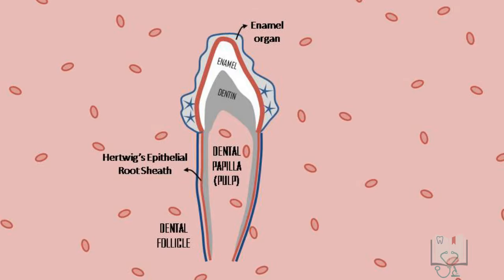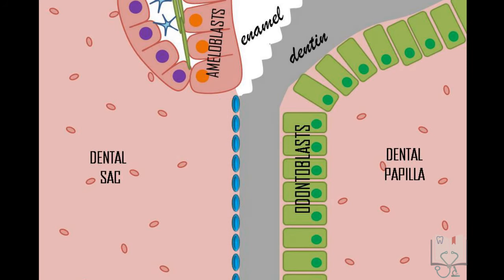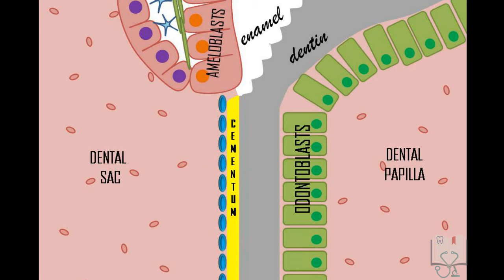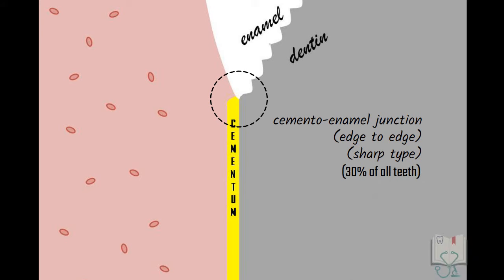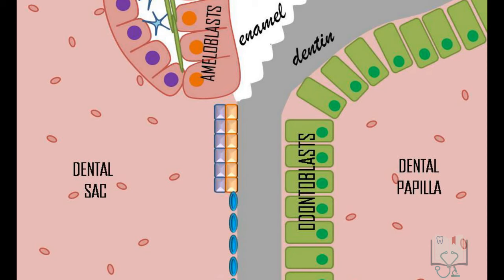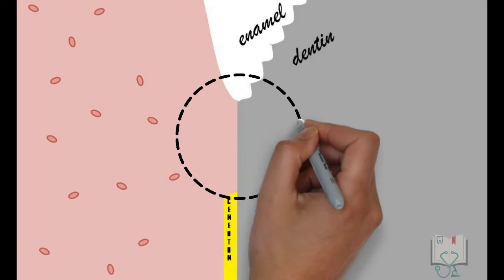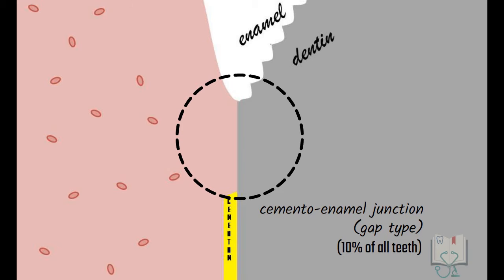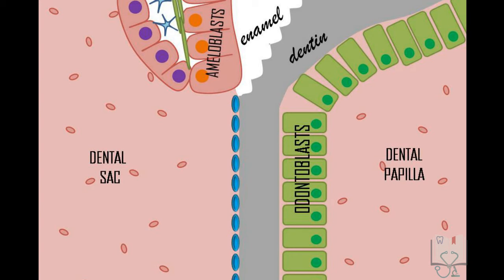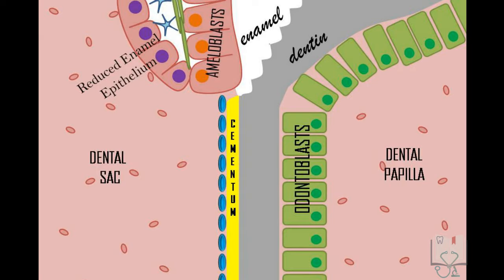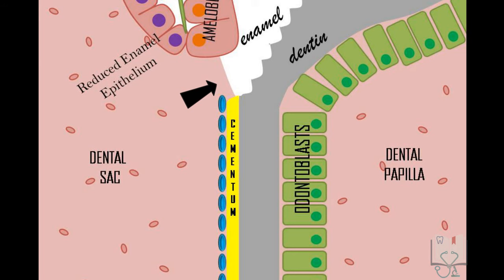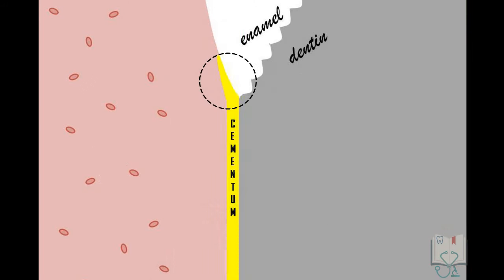Formation of the cementoenamel junction: during tooth development, ameloblasts deposit enamel till the cervical loop, adjacent to which Hertwig's epithelial root sheath gives way for dentine deposition. Hertwig's epithelial root sheath is then replaced by differentiating cementoblasts, which deposit cementum, developing the cementoenamel junction — this is the edge-to-edge or sharp type. Sometimes, as Hertwig's epithelial root sheath gives way to cementoblasts, a few sheath cells fail to move away from the radicular dentine, not allowing differentiation of cementoblasts and deposition of cementum, resulting in a gap-type cementoenamel junction. More commonly, if the reduced enamel epithelium is unable to carry out its protective role perfectly, it may expose the enamel slightly, resulting in an overlap type of cementoenamel junction.